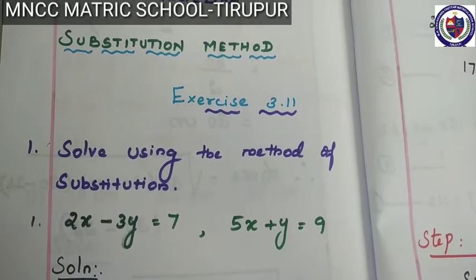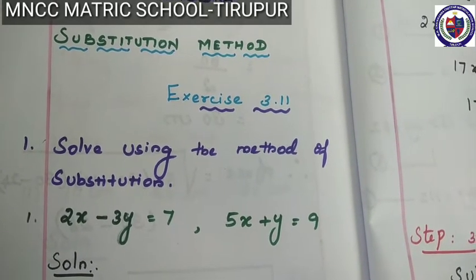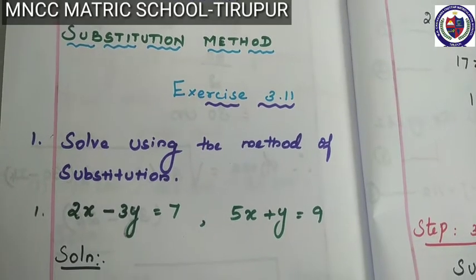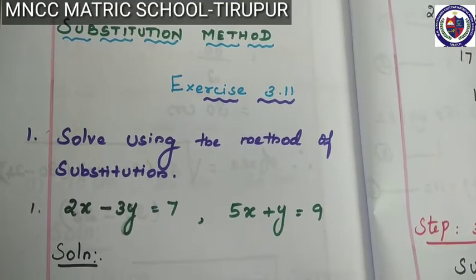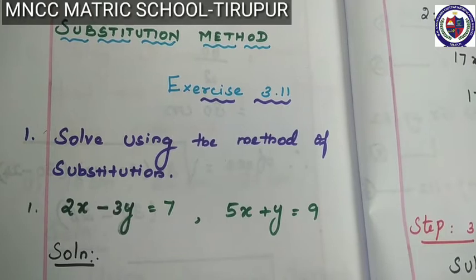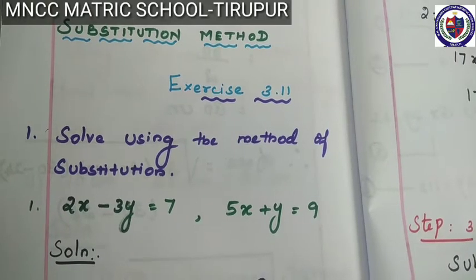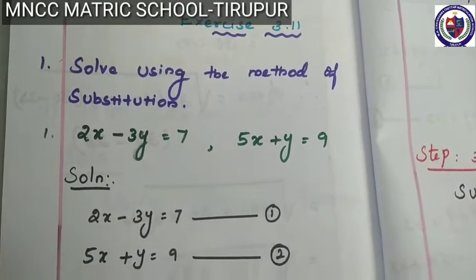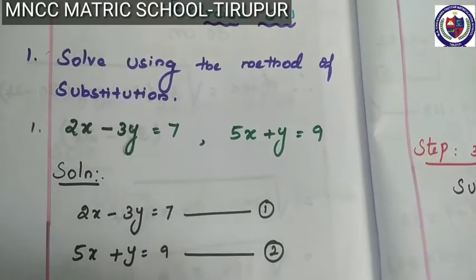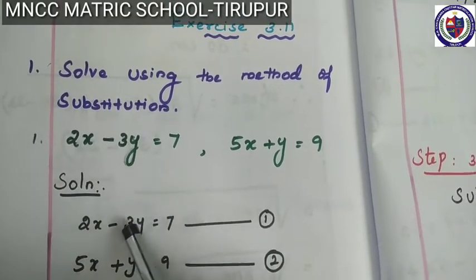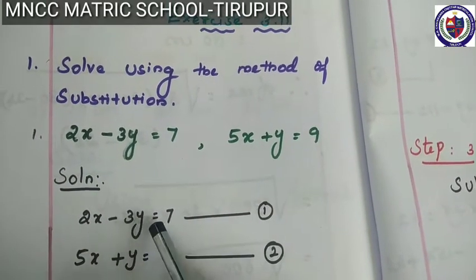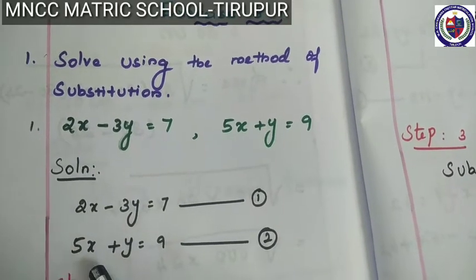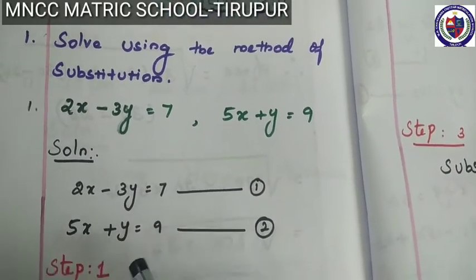Exercise 3.11: solve using the method of substitution. The first question: 2x minus 3y is equal to 7; 5x plus y is equal to 9. The solution. First we write equation number 1: 2x minus 3y is equal to 7. The next equation 2: 5x plus y is equal to 9.